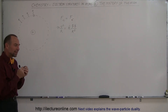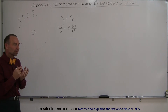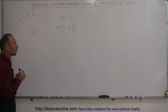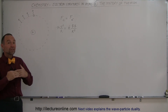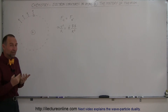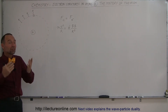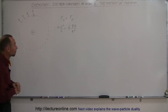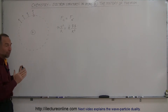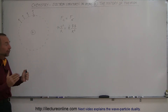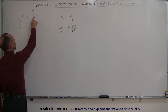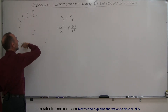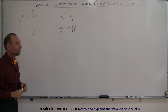Because of everything that scientists understood several hundred years ago, they could not figure out why an atom should even exist in the first place, because it seemed to violate all laws of physics and chemistry. Looking at a simple typical atom — the hydrogen atom — which has a single proton in the middle and an electron zipping around the nucleus at very high speeds.